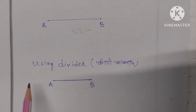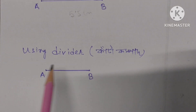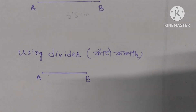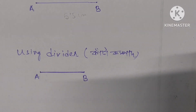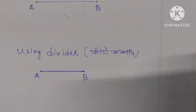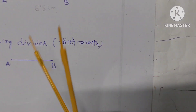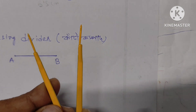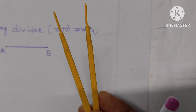Again, we can measure using a divider. Divider means a catacomb compass. The second method we can use is the divider.